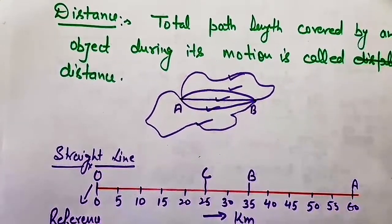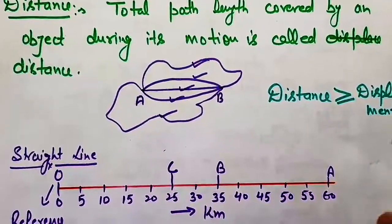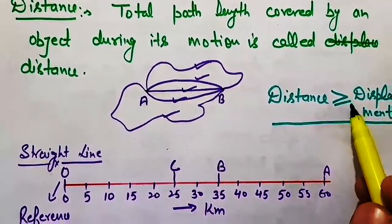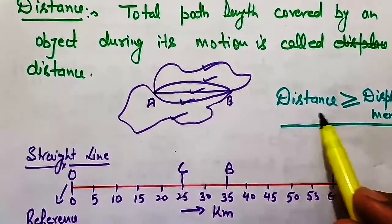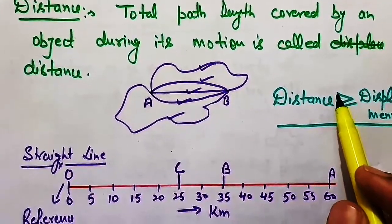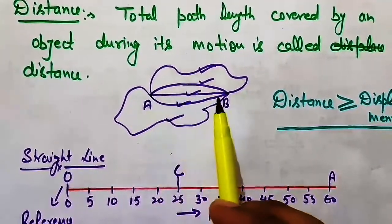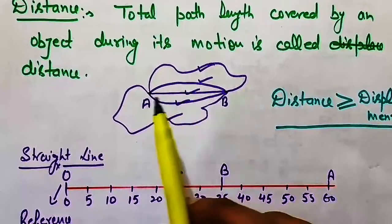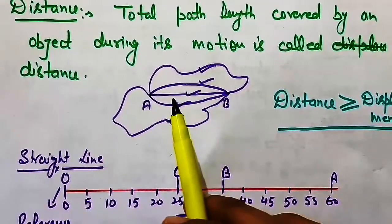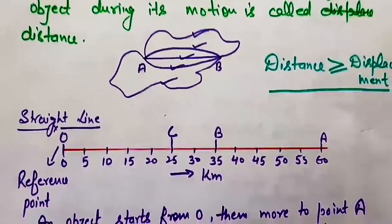There is an important condition or relation between distance and displacement. Distance is always greater than or equal to displacement. Distance will be equal to displacement only when we have a straight line path between the initial and final point. In all other cases, distance is always greater than displacement. These two terms you must understand before studying motion.